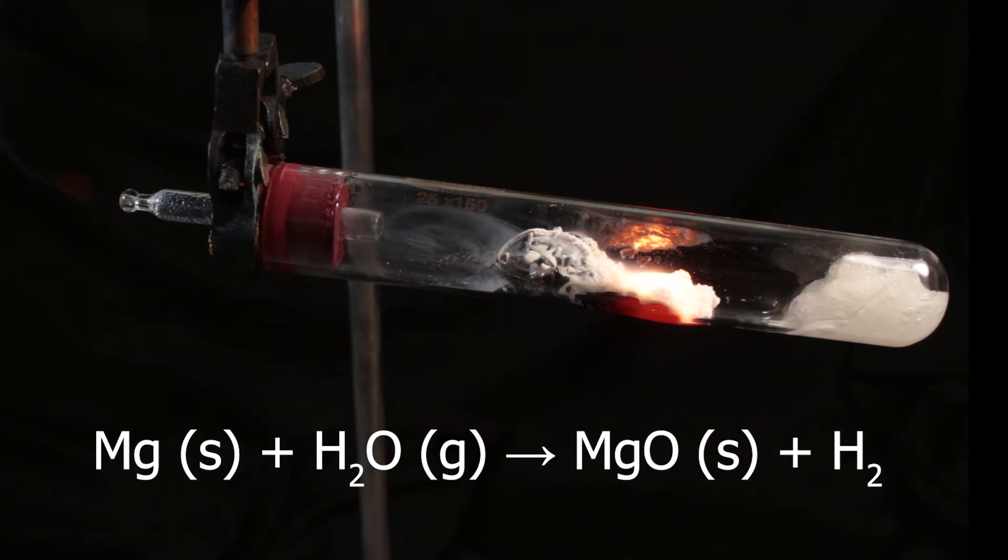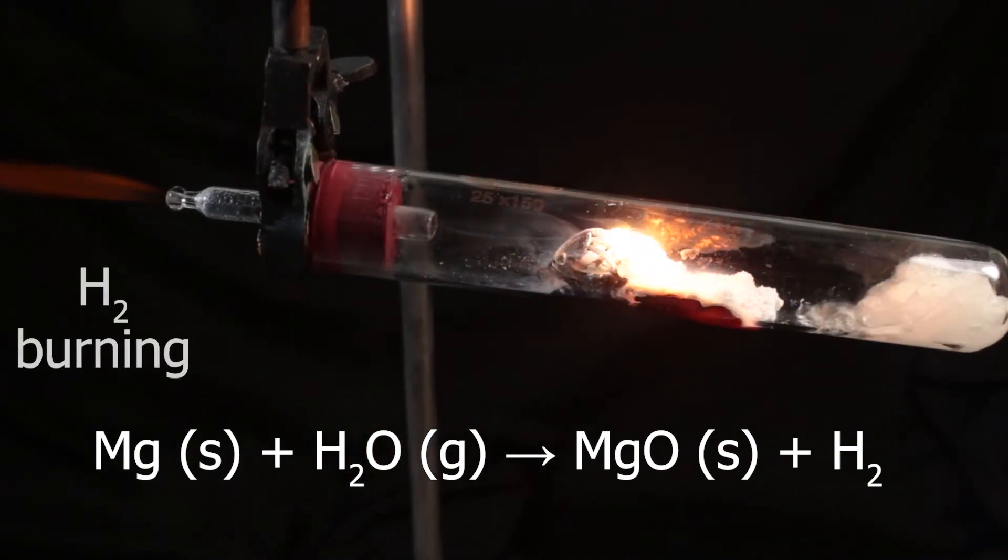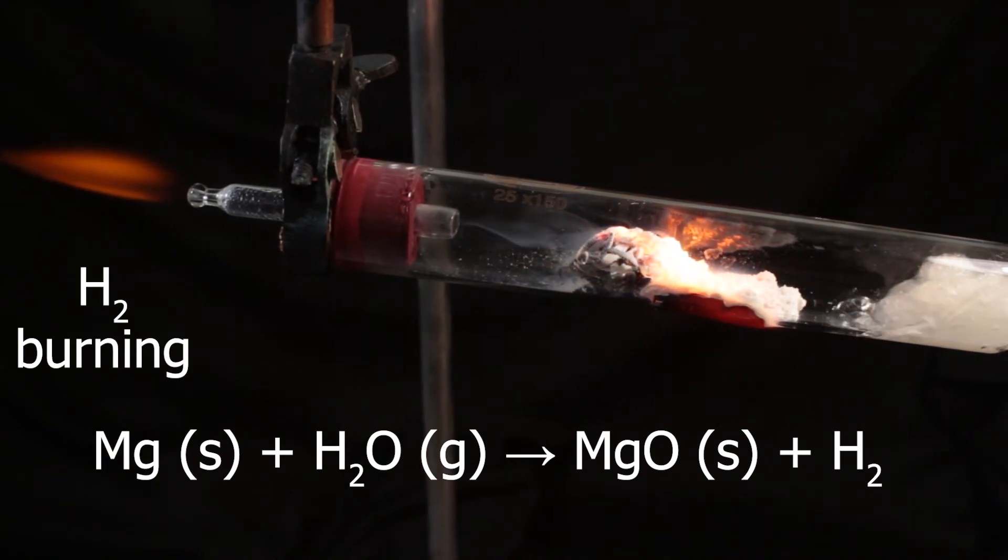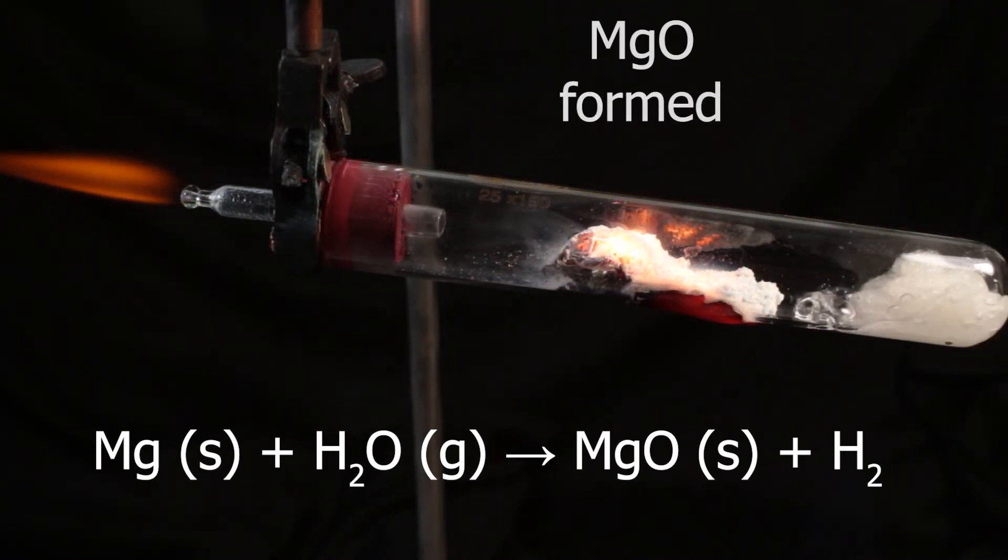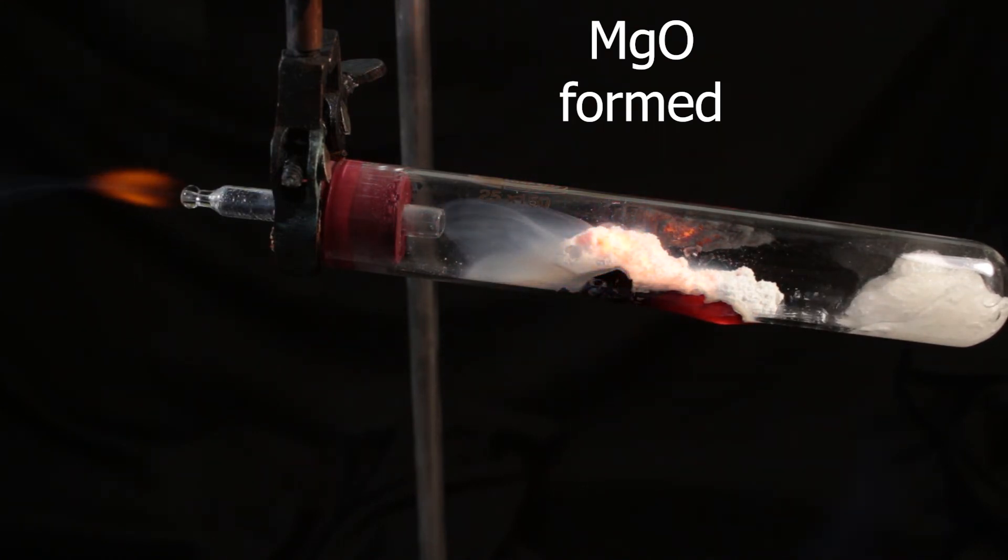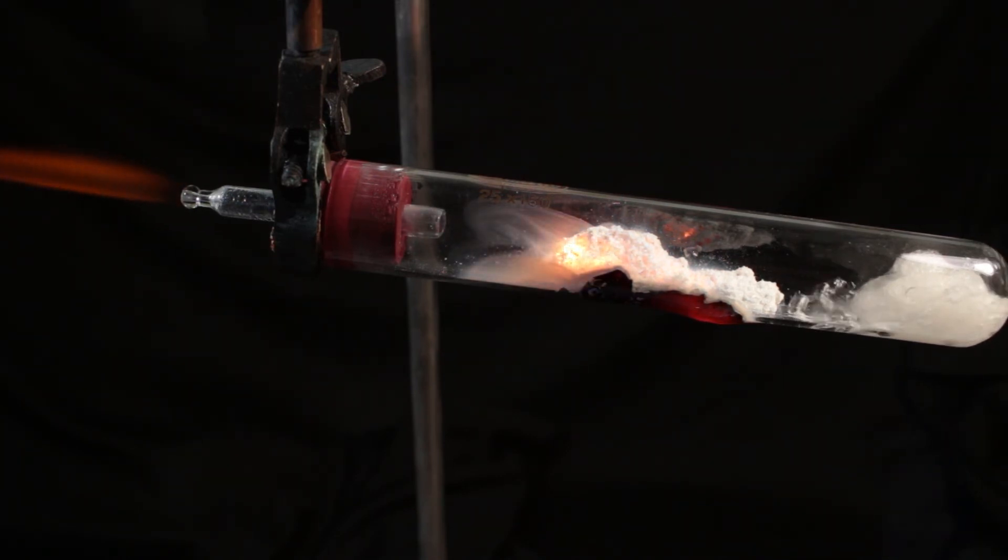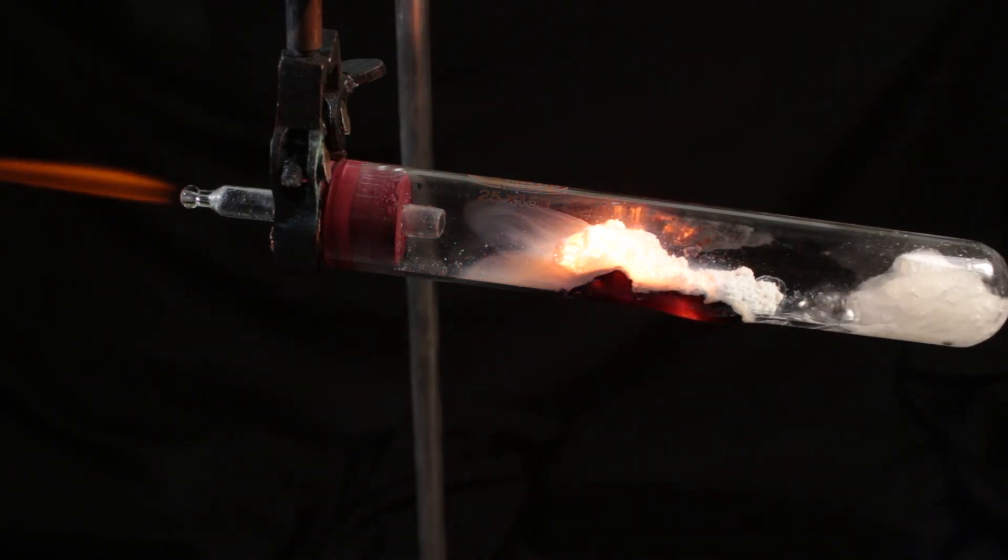Magnesium oxide is formed and hydrogen gas, which we can light up. Here is a jet of the gas. White substance is magnesium oxide. The rule of thumb is that when metal reacts with cold water, hydroxide is formed. When metal reacts with hot water vapor, oxide is formed. Hydroxide would decompose at these high temperatures.